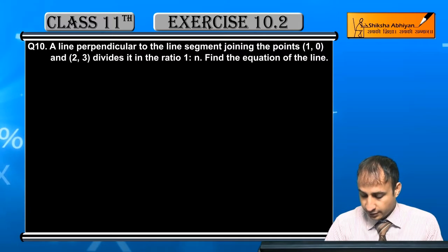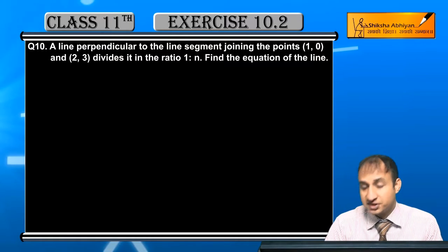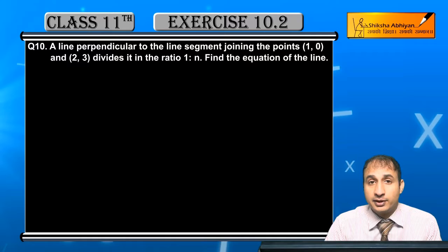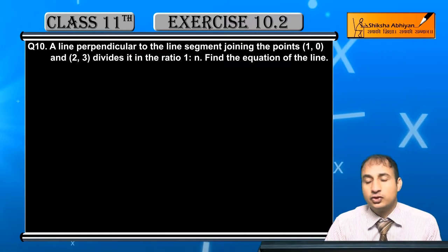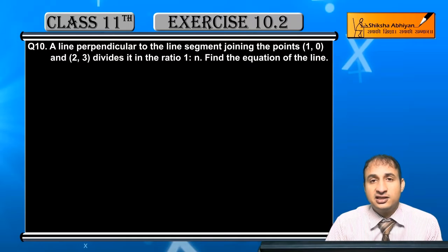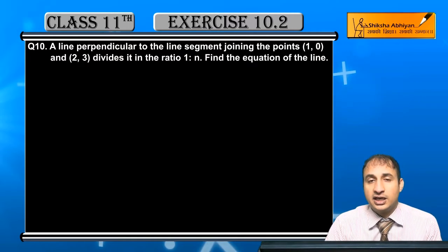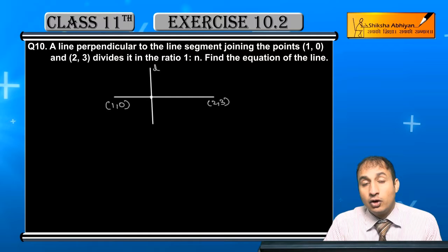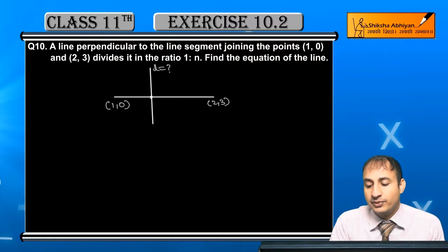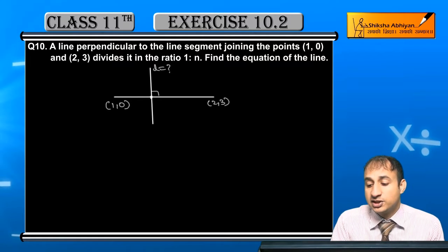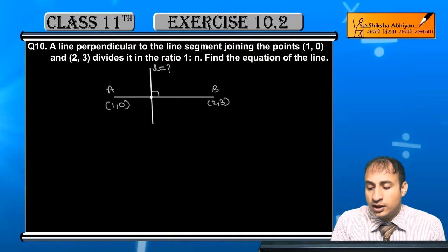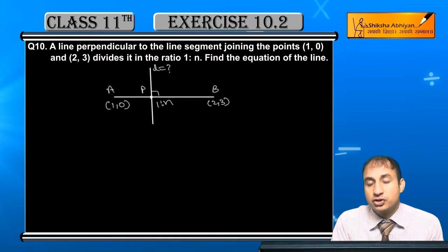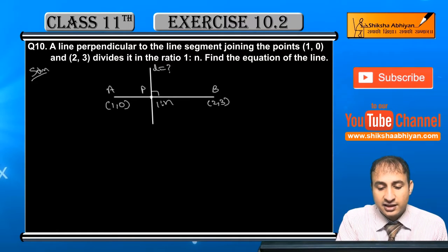Now student, see the 10th question. The question is: a line perpendicular to a line passing through (1,0) and (2,3) divides it in a ratio 1 is to n. Find the equation of the line. I will draw to better understand. Now we will find the line L, the equation which is perpendicular to the other line. Since this is the point P where intersection occurs, it divides in the ratio 1 is to n.